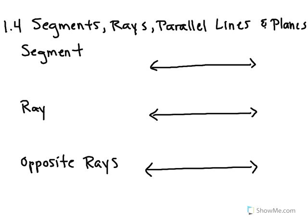We're going to first take a look at segments and rays and opposite rays. A segment is simply just a part of a line that has two endpoints. On this line here, I'm going to name this point A and this point B, and I'm going to highlight the part in between them. This right here is my segment.